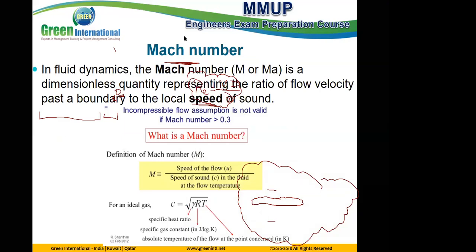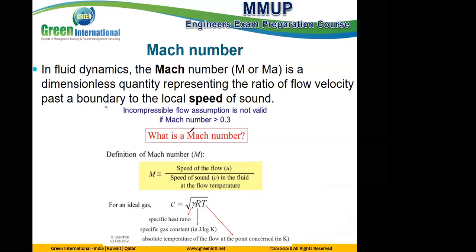Back again to the Mach number. What is Mach number? This number is used to define the type of flow with respect to the speed of sound. The equation for Mach number equals the speed of the flow divided by the speed of sound in the flow. If it is equal to 1, it's called sonic.